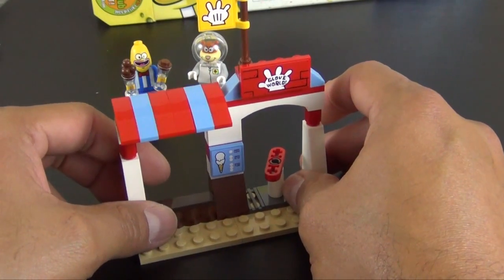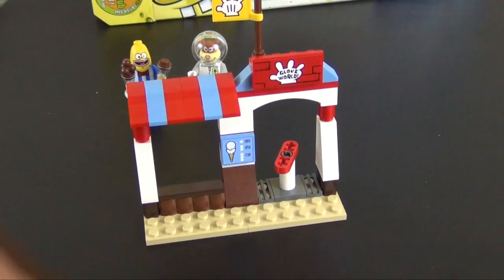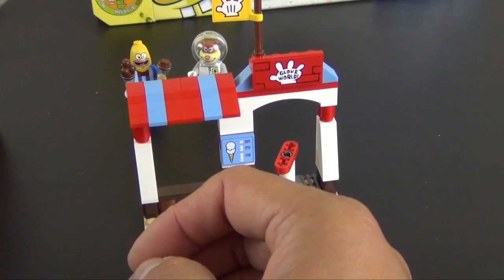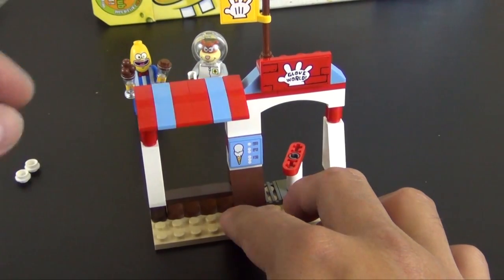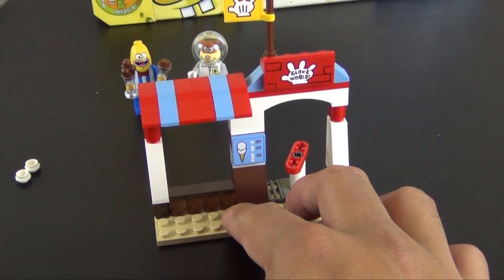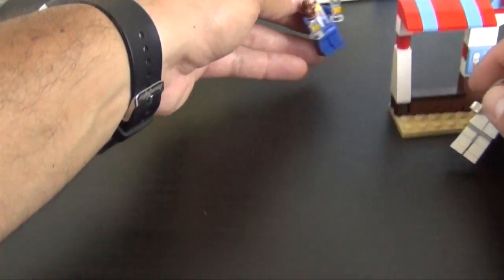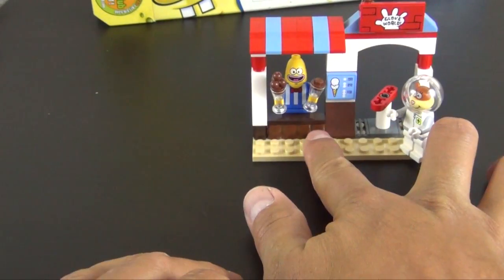All right, so that completes the build of bag one. We have some white studs left over, and I didn't see us use any of them. They gave us two white studs, they weren't used anywhere in the build, but they're extras. All right, so let's move on to bag number two.